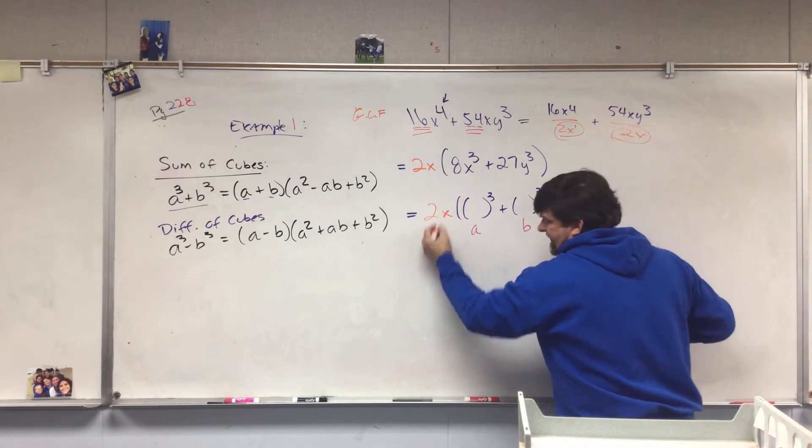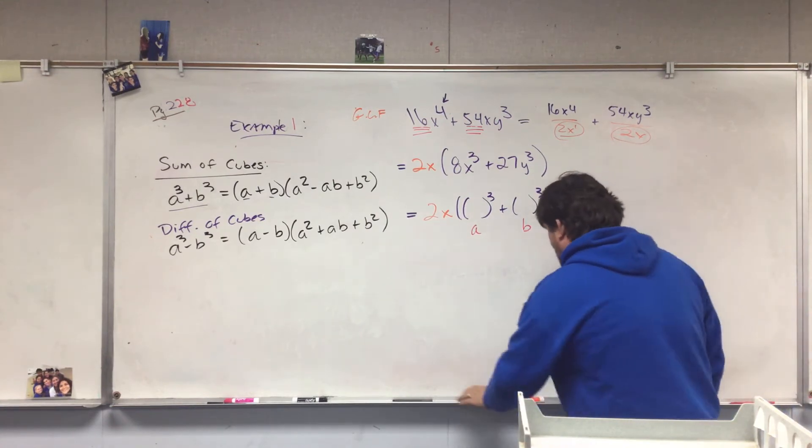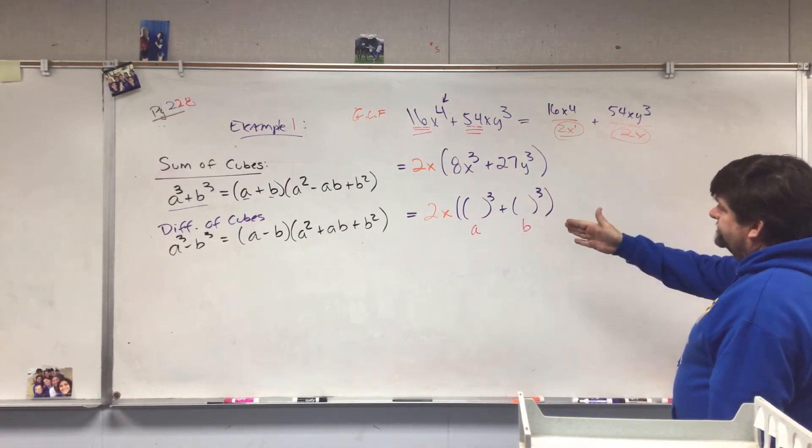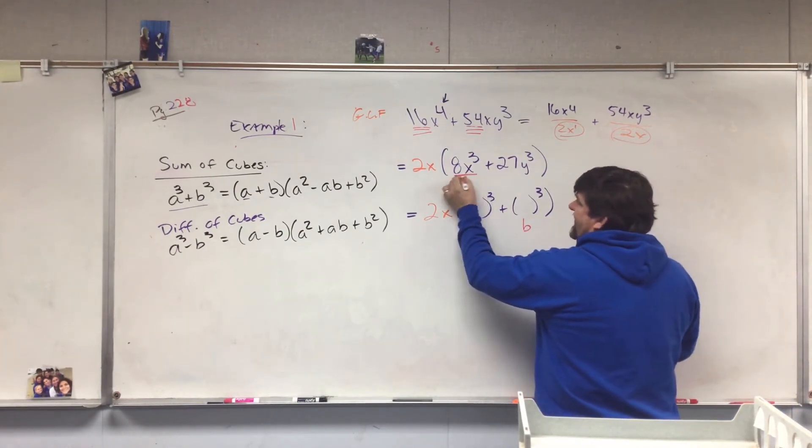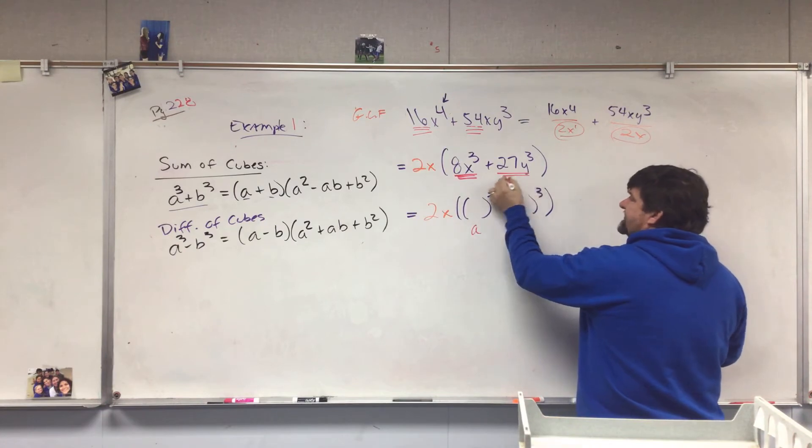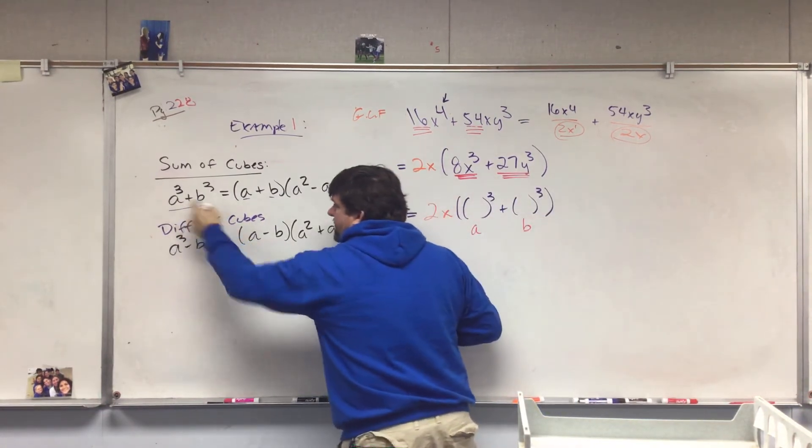And then it just travels along for the ride, it's like the passenger in the car with the driver. So what we have to do now is we have to take 8X³ and 27Y³ and we need to get them in this form, perfect form.